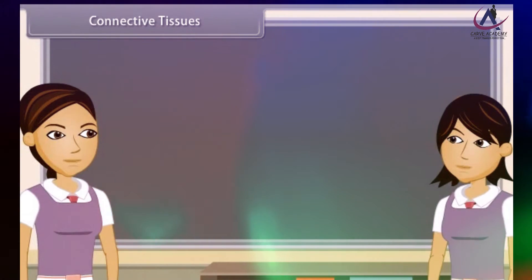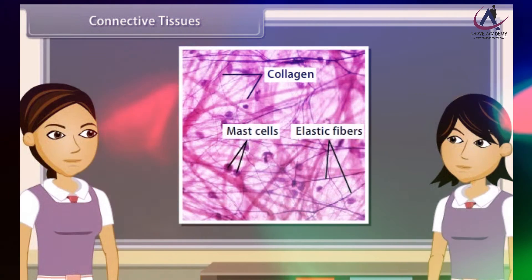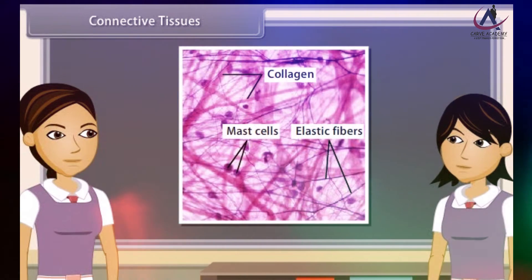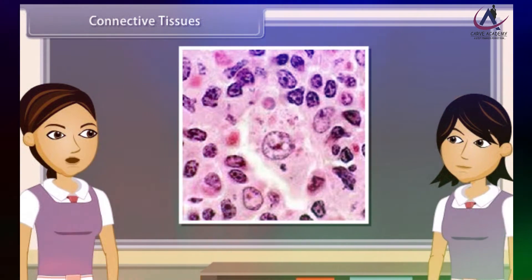Connective tissues bind different organs and parts of various organs together. The cells of connective tissues are living, separated from each other and very few in number. A gel-like intercellular substance called matrix forms the main bulk of the connective tissue. Matrix is fibrous in nature and binds other tissues.